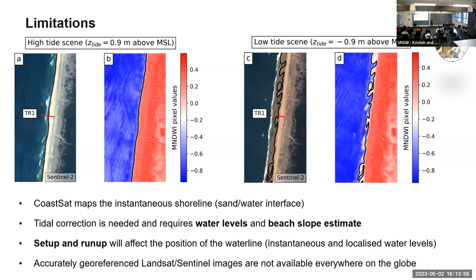When you take a picture it's an instantaneous image, so correcting for waves is tricky — it requires knowing something about the waves, which we don't always have. We have something called setup — the mean elevated water level that exists when waves are present — and then runup, which is the wave swash going up and down the beach face. These are all in those pictures and we have to correct for them. They're big signals on flat beaches with large waves, but on beaches like Narrabeen the correction is quite small, so it depends on beach specifics.